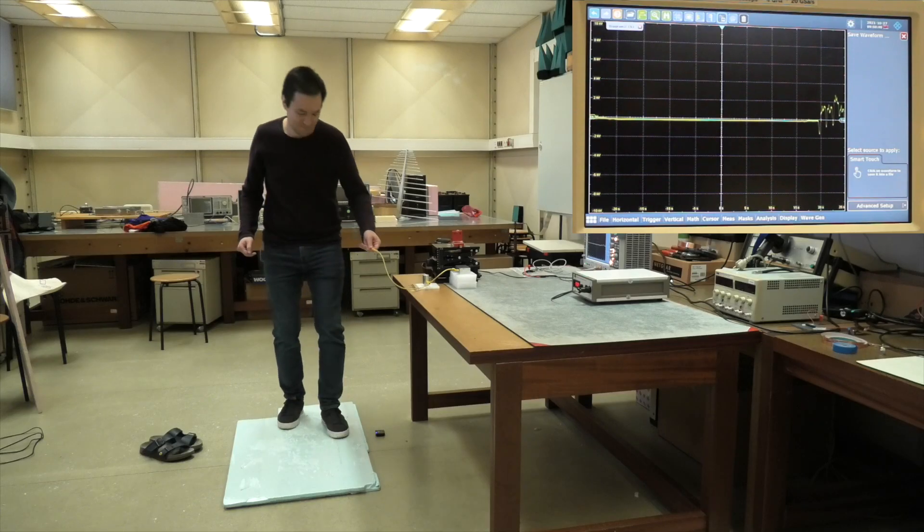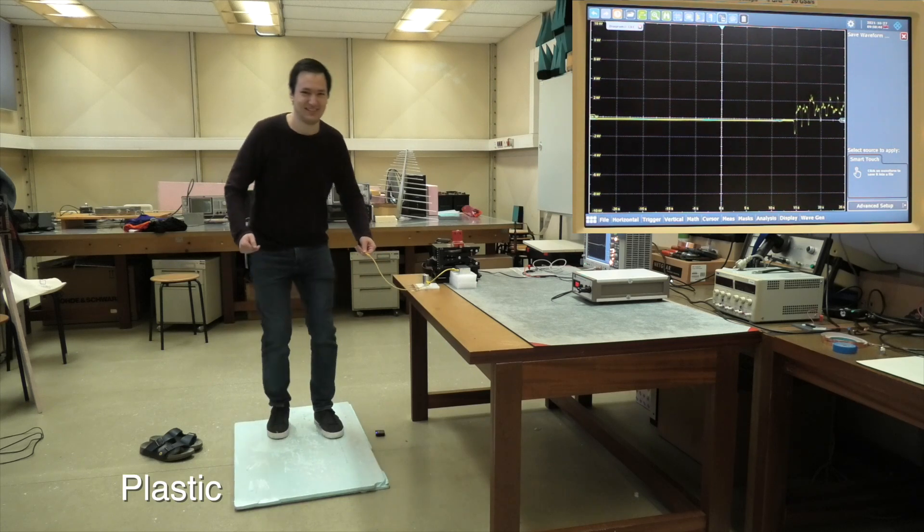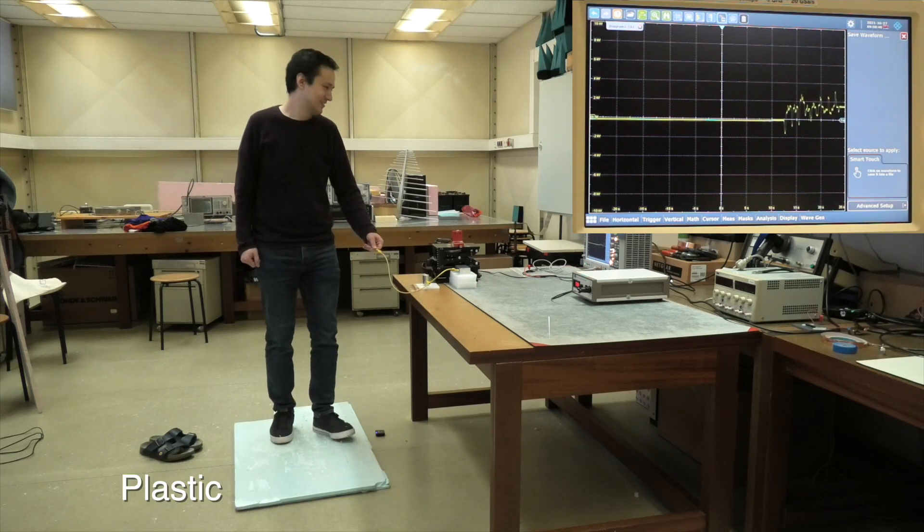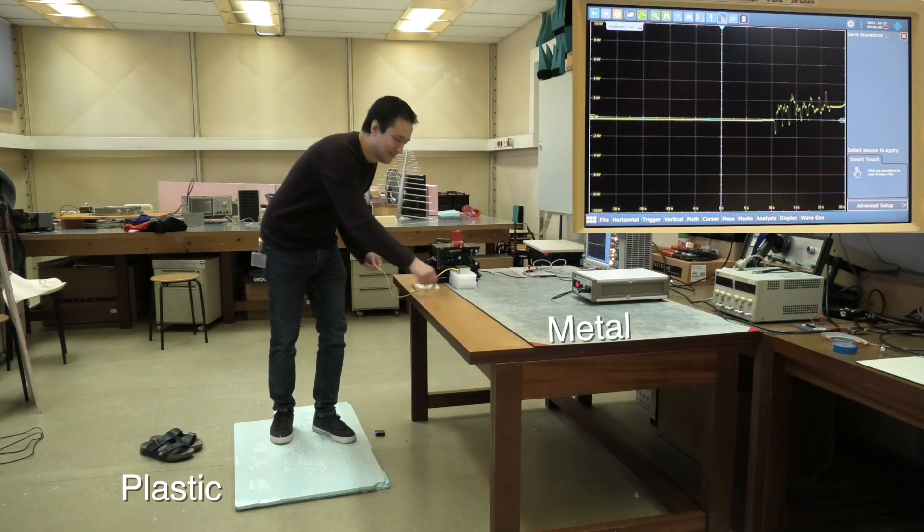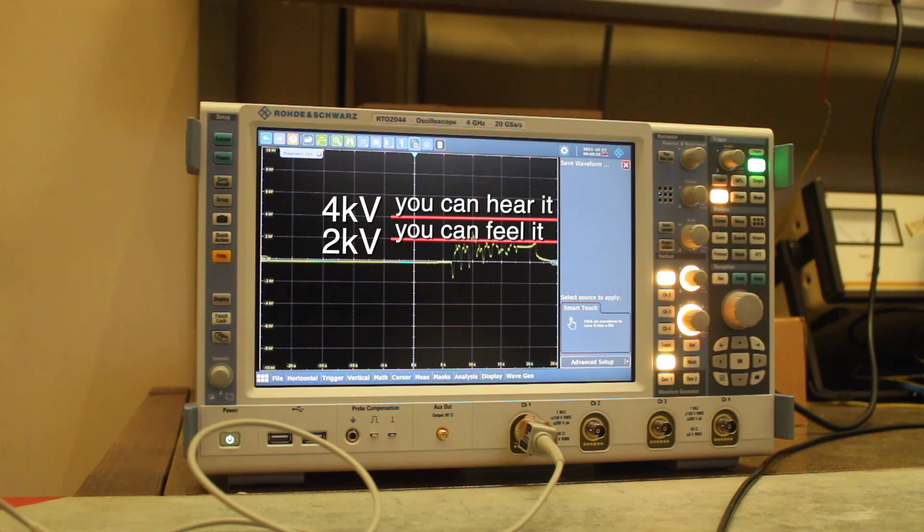In a nutshell, by dancing a little bit on this plastic platform, I charge myself. By touching this grounded metal surface, I discharge myself. If I'm charged to 4000 volts or above, this discharge can be quite uncomfortable.